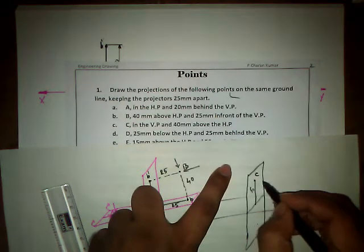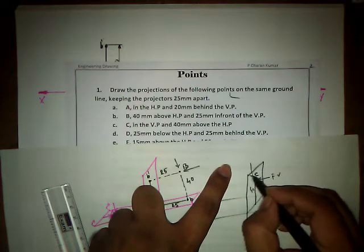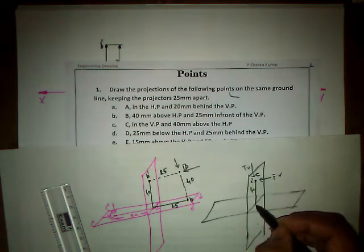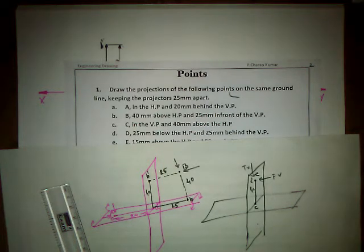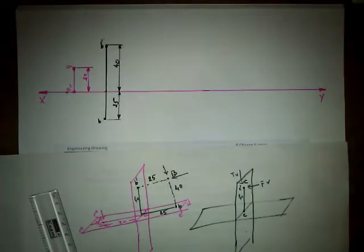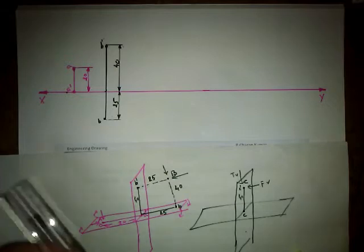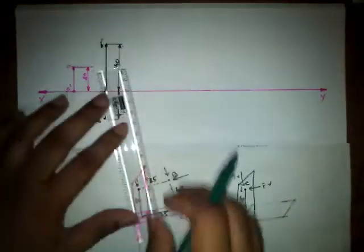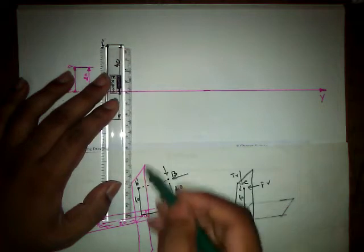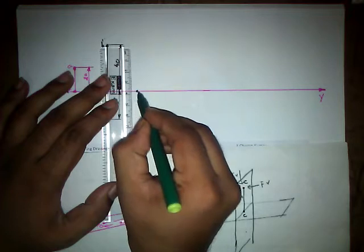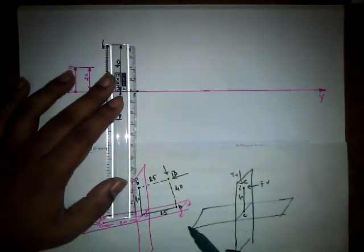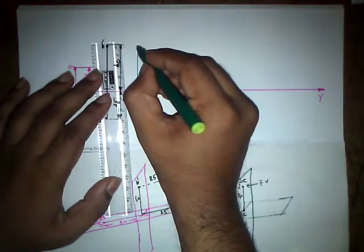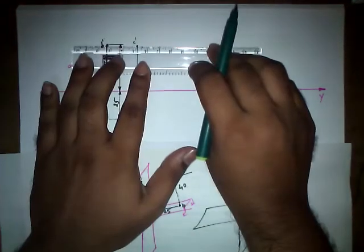This is going to be our front view and this is going to be our top view. The front view is laid over there itself, so this is going to be c'. The top view is projected to the opposite plane onto the XY reference line, and that is going to be c. So point C is on the XY reference line, and 40mm distance gives us c dash.